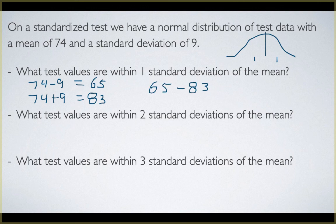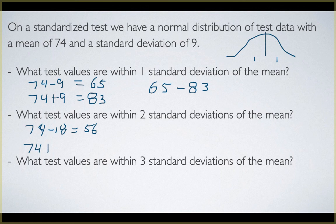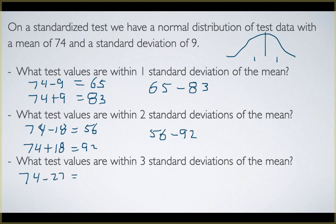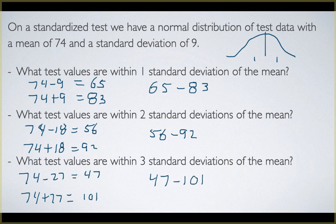For two standard deviations, we multiply 9 by 2 to get 18. So we have 74 minus 18, which is 56, and 74 plus 18, which is 92 — giving a range of 56 to 92. For three standard deviations, we multiply by 3 to get 27. So 74 minus 27 is 47, and 74 plus 27 is 101. Those scores from 47 to 101 are within three standard deviations.